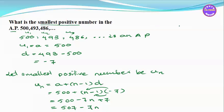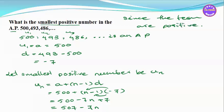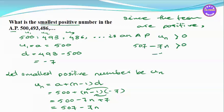For the terms to be positive, we require UN greater than zero. So 507 minus 7n is greater than zero, which means minus 7n is greater than minus 507.